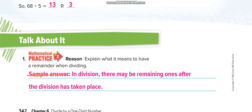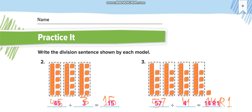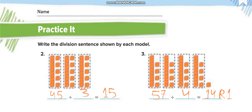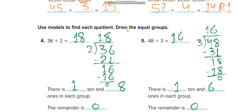In division, there may be remaining ones after the division has taken place — that is what a remainder means. Next is independent practice. You have to solve all these questions by yourself and then match your answers from this video. Here: one tens in the answer, eight ones and zero remainder.